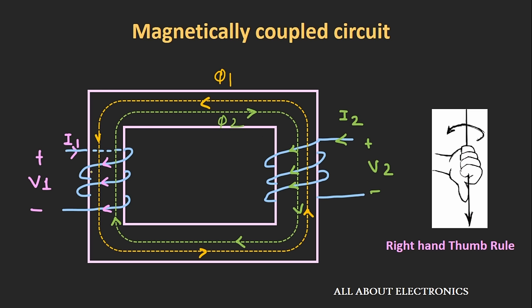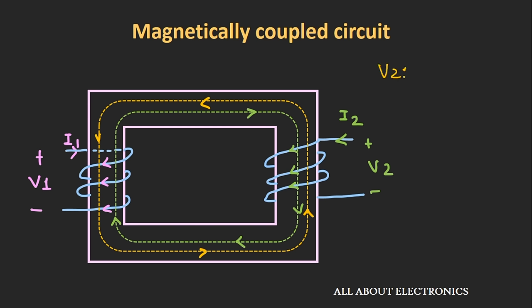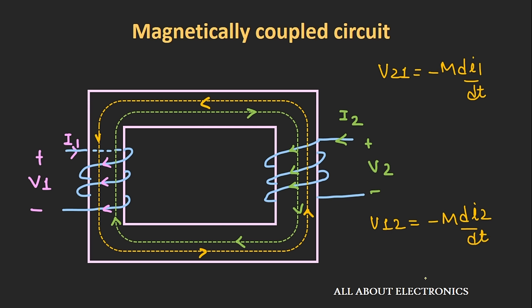Now if we apply currents I1 and I2 simultaneously, the flux produced by these coils flows in those directions. As you can see, the direction of flux Φ1 and Φ2 are opposite, so they cut each other. The induced voltage in the coils due to mutual coupling will be negative. V21, the voltage induced in coil 2 due to current in coil 1, is given by −M·di1/dt. Similarly, V12 is given by −M·di2/dt, where M is the mutual inductance between the two coils. The polarity of the induced voltage is negative.